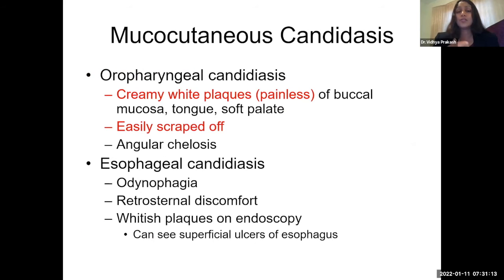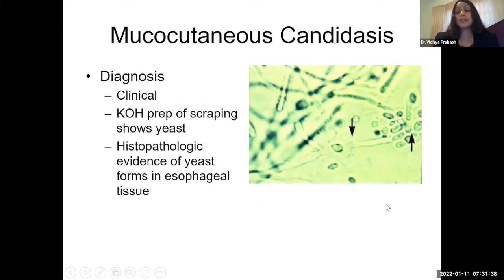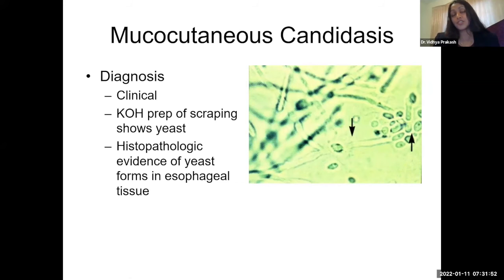With oropharyngeal candidiasis, you see painless, creamy white plaques that are easily scraped off, with possible associated angular cheilosis. With esophageal candidiasis, patients generally present with odynophagia and retrosternal discomfort; you can see everything from whitish plaques to superficial ulcers on endoscopy. Diagnosis is clinical — you can confirm with a KOH prep of scrapings showing yeast, and histopathologic evidence of yeast forms in esophageal tissue is diagnostic.